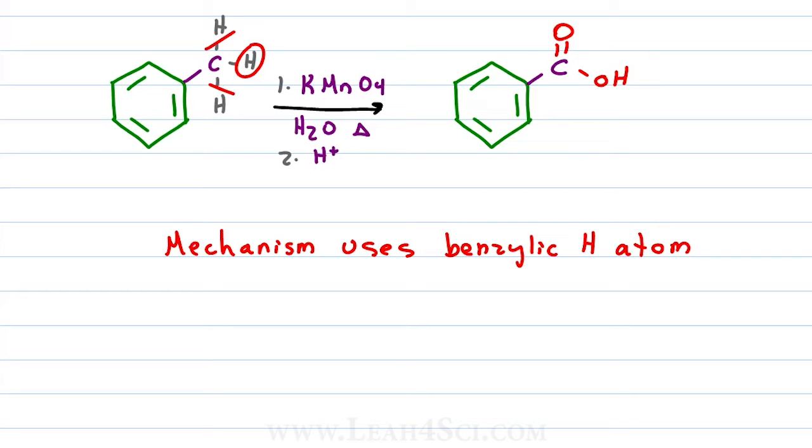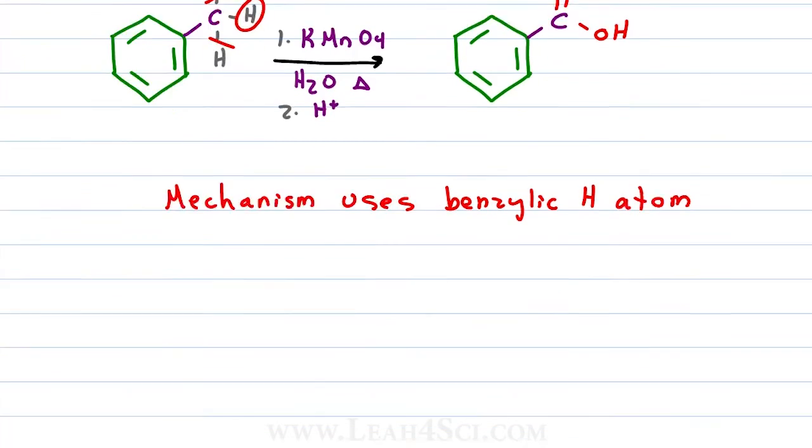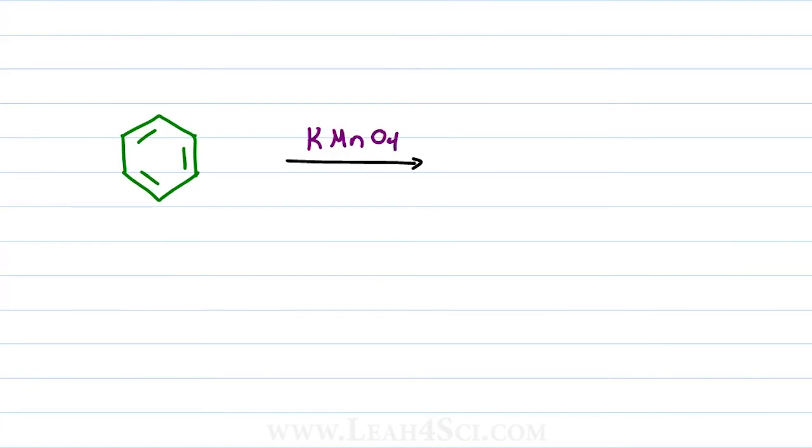And it's not just methyl, it's any alkyl side chain that has a benzylic hydrogen. If you're asked to oxidize a ring with an ethyl group, you identify the first carbon, verify that it has a hydrogen, cut everything else off and the product is a carboxylic acid, specifically benzoic acid. Meaning it's not the last carbon that gets oxidized, it's the benzylic carbon where everything else is cut off.